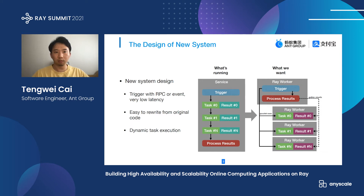We think that we should keep an RPC call as a trigger method because this is a latency-intensive scenario. Second, the code of the old platform should be easy to rewrite and run on Ray — thanks to Ray's API, it's not very hard. And last, the number of split tasks is different every time. We need to assign the tasks to a proper worker dynamically.